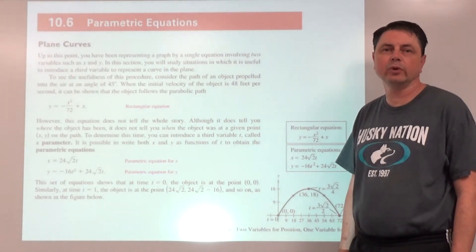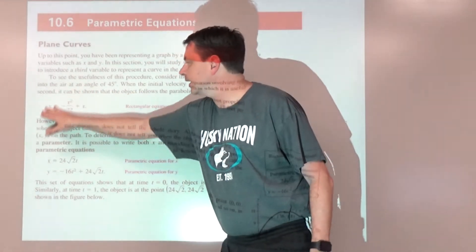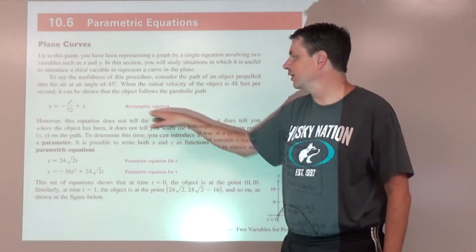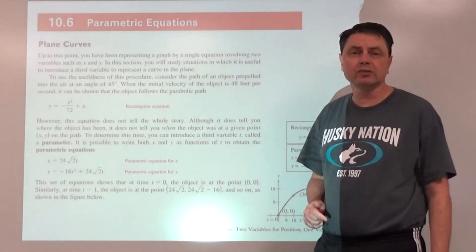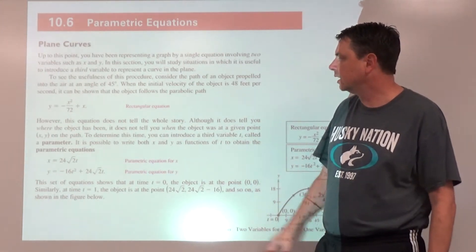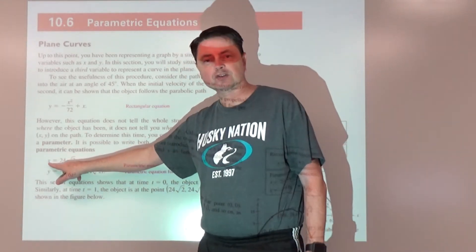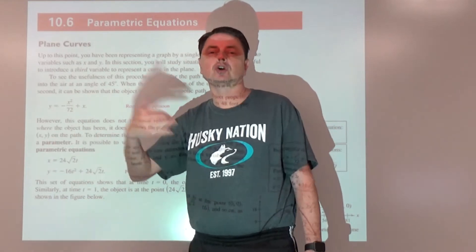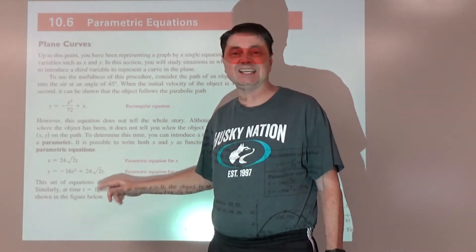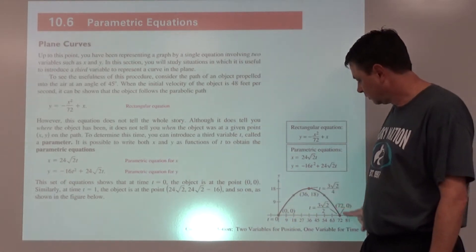Welcome to Hartman Math. This is lesson 10.6: parametric equations. A regular equation like y equals negative x squared over 72 plus x is called a rectangular equation — it's in terms of x and y. We can break that up into parametric equations, where we define the x and y coordinates in terms of some other variable called the parameter, often t, standing for time.